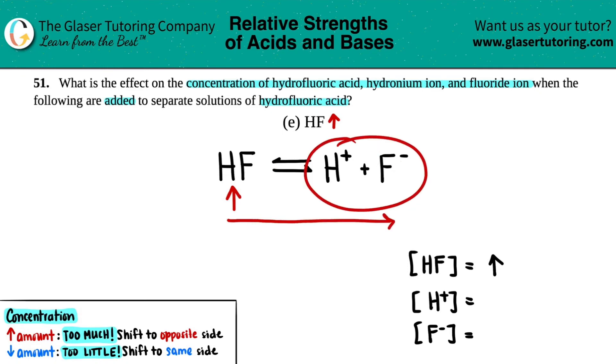Since you're going to the products, that's what's going to increase. H+ is going to increase, and F- is also going to increase. So H+ will increase, F- will increase, and that's the answer for this one. They gave us an easy one for the last question.